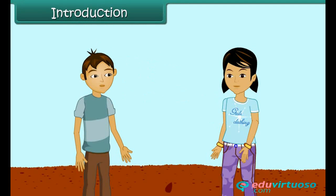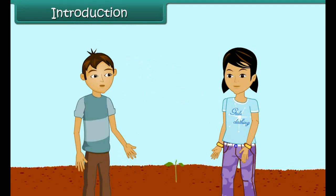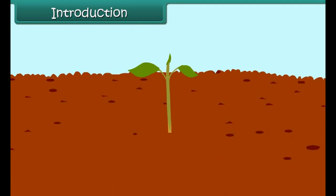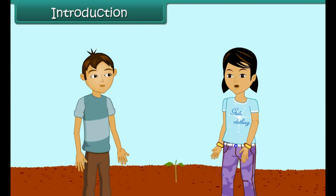Look, Ruchika, there is a new plant arising in the soil. Yes, there are only two small leaves coming up in the soil. Ruchika, do all the plants grow up like this only?